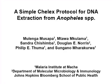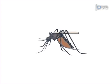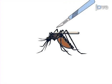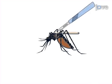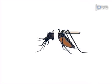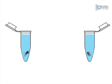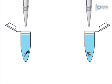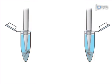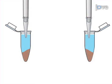The overall goal of this procedure is to extract malaria parasite and mosquito DNA from the midgut and salivary gland sections of Anopheles specimens. This is accomplished by first cutting the mosquito exactly at the joint between the abdomen and the thorax, thus separating the midgut from the salivary gland section. Next, each section is ground separately in deionized water.